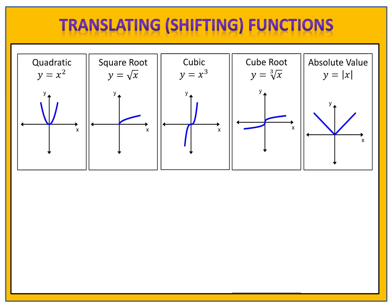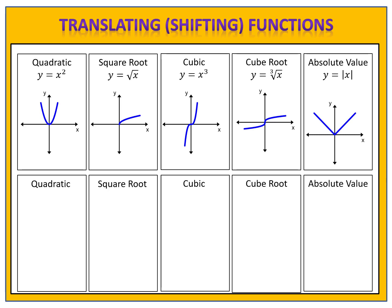Here we have our five parent functions, and at the bottom we're going to do a shift. Suppose we take the quadratic function y equals x squared and we change it to y equals x squared plus 2. That plus 2 shifts the parabola up 2 units.